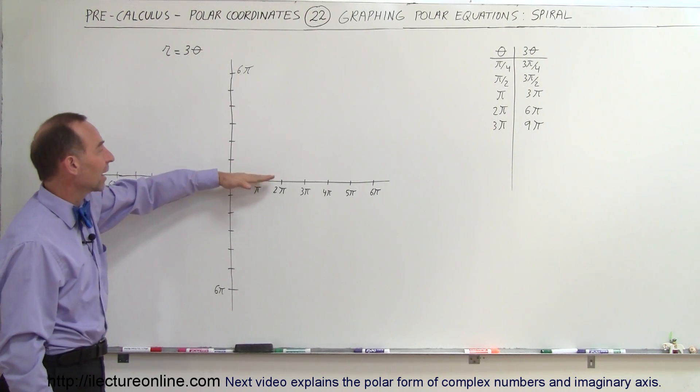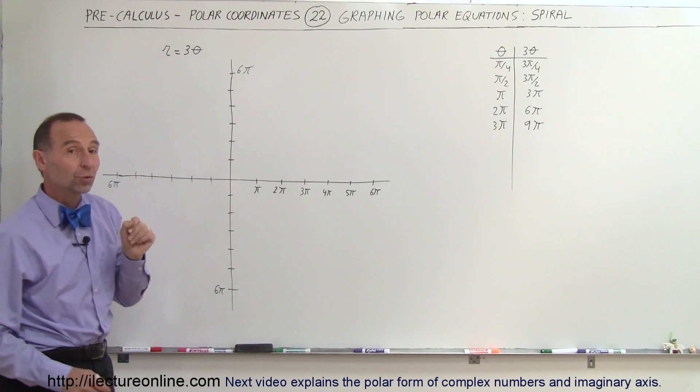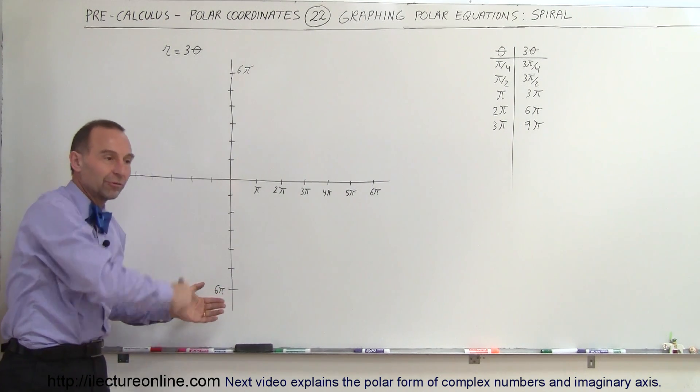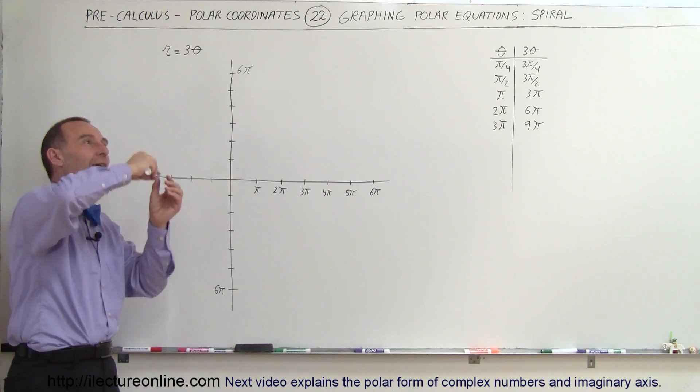So as theta gets bigger, as the angle gets bigger, r gets bigger as well, and because of that we'll get a kind of spiral. It goes out farther and farther because the larger the angle, the larger the distance from the origin to the point of interest.